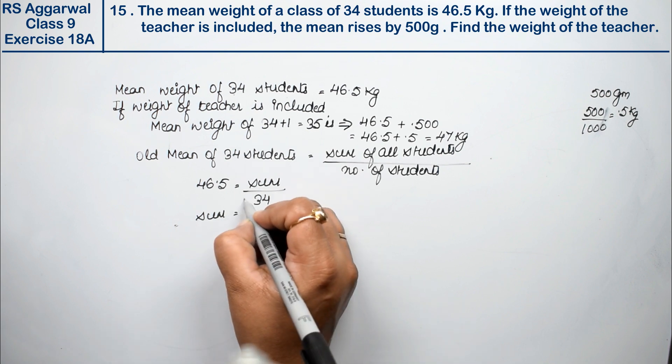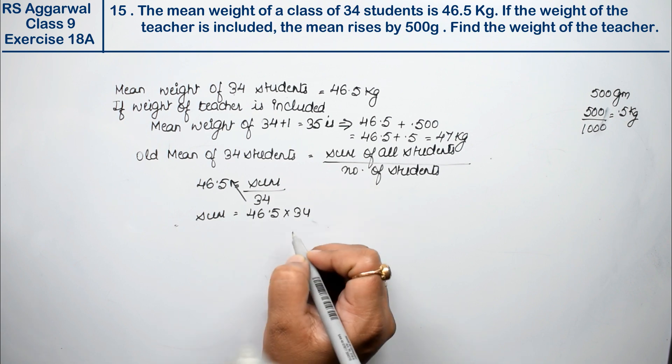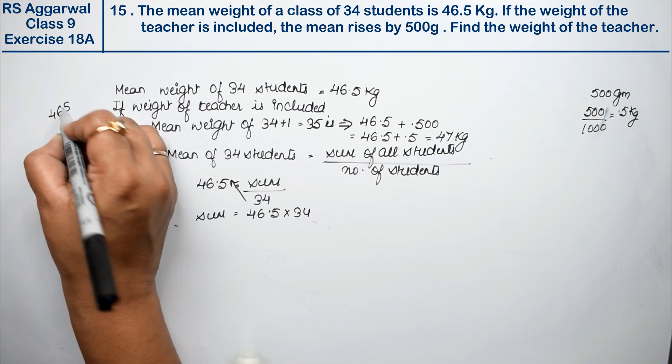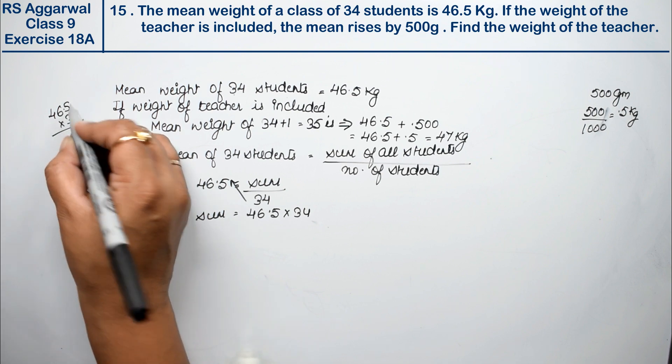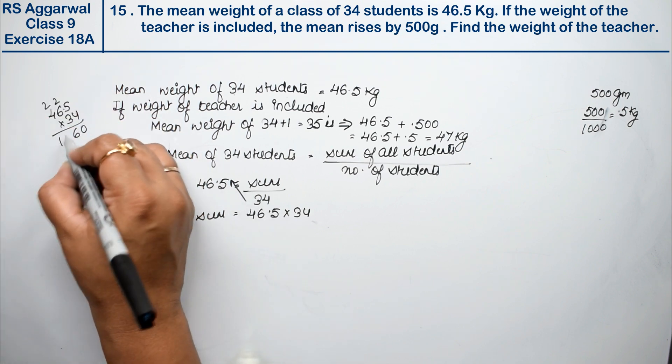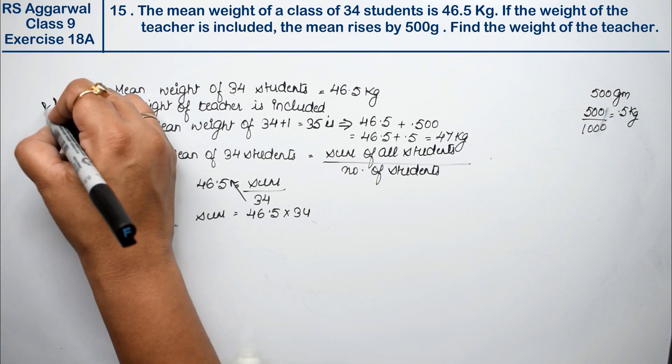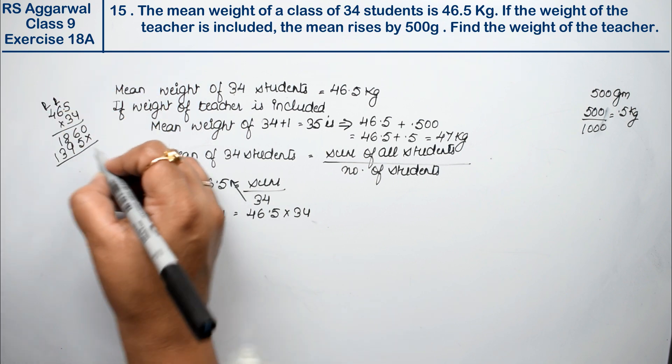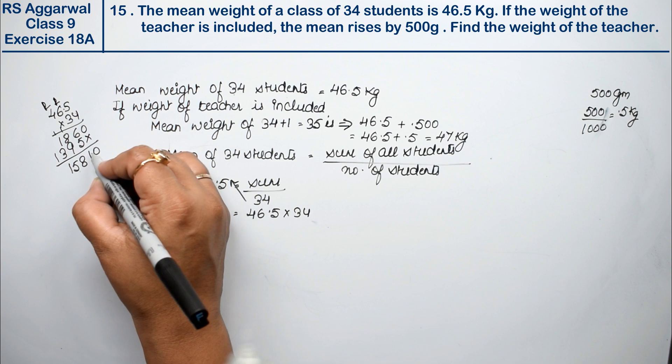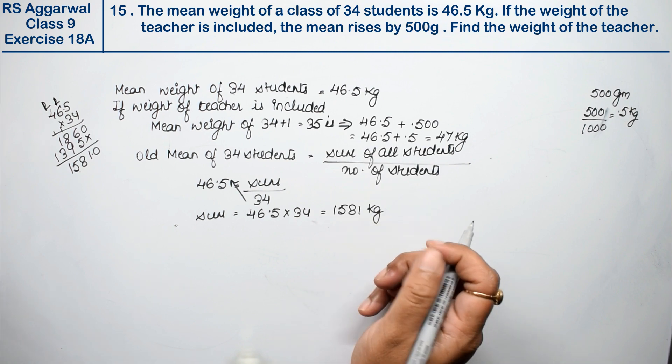So sum equals 46.5 times 34. [Performs multiplication: 5×4=20 carry 2, 6×4=24+2=26, 4×4=16+1=17+1=18; 5×3=15 carry 1, 6×3=18+1=19 carry 1, 4×3=12+1=13] Equals 1,581 kg. Weight came out for all students.